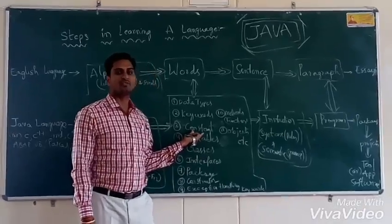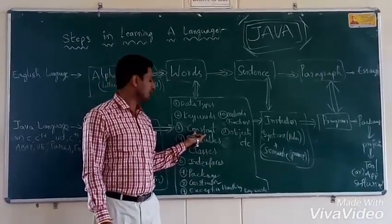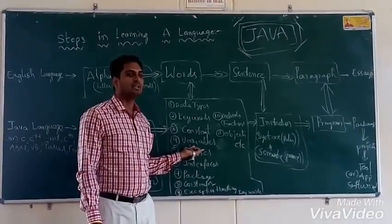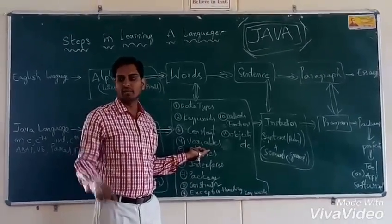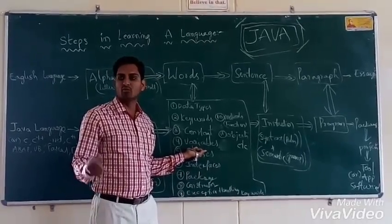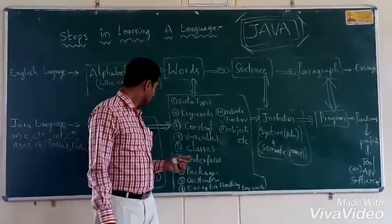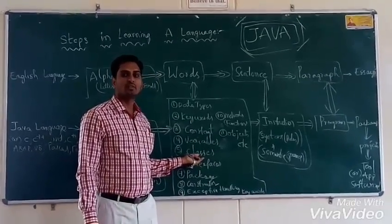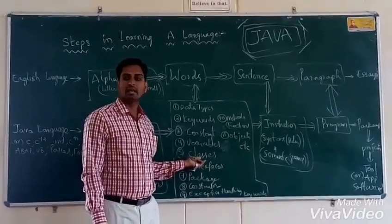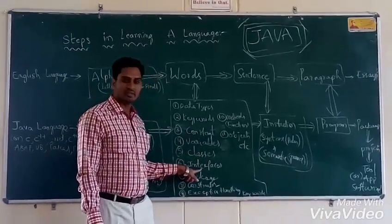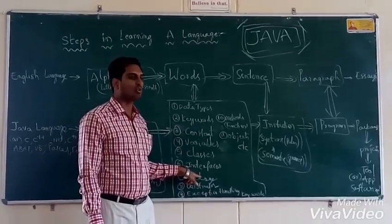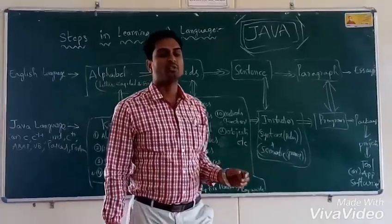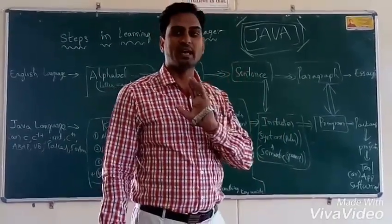Then constants — which will not change. And variables — which we can change. We have classes; there is a separate definition for a class, and we have inbuilt classes. Then we have interfaces, which are similar to classes. We can start a program with a class or an interface. In packages, we have some packages, and using those packages we can type a program.